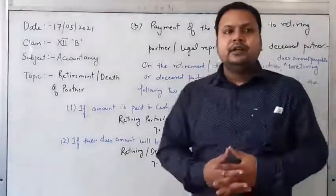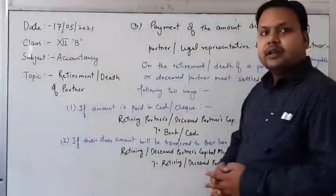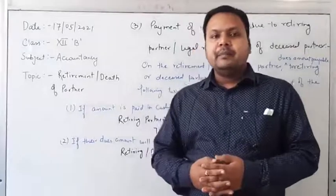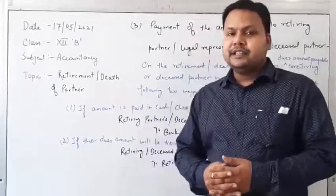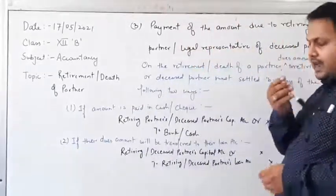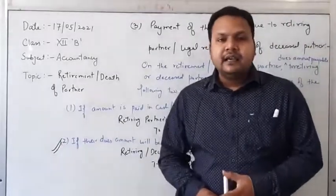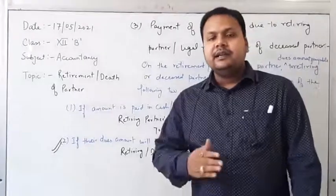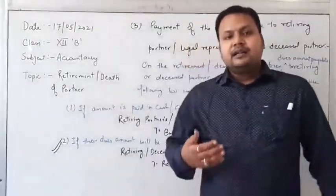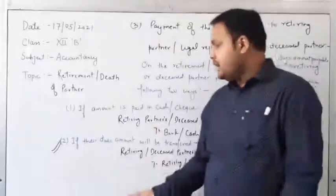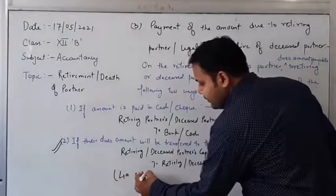Here is the most important note related to payment of amount due to retiring partner or legal representative of deceased partner. If there is no information about how to pay the dues amount, in that situation we have to follow the second way. It means if the question does not specify how to pay the retiring or deceased partner's legal representative, then the due amount must be transferred to the loan account, and this loan will be shown on the liability side of the balance sheet.